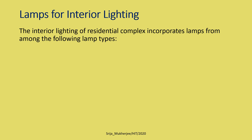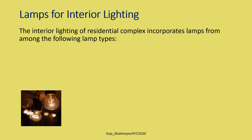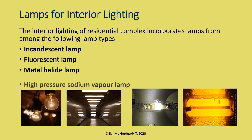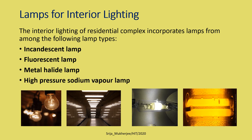The interior lighting of a residential complex incorporates lamps from among the following types. First, incandescent lamps — we will look at their properties, color rendering index, and color light emission. The lamps used for interior lighting of a residential complex include: fluorescent lamps, metal halide lamps, and high-pressure sodium vapor lamps. So these four lamp types are used.